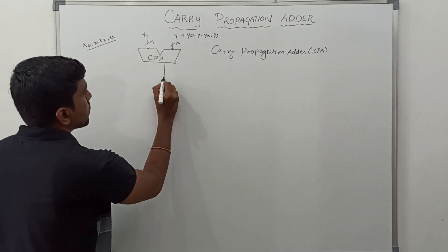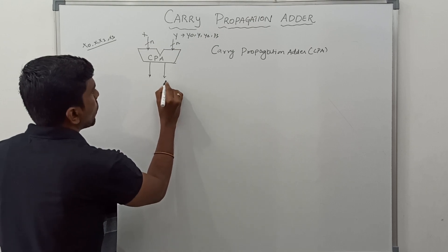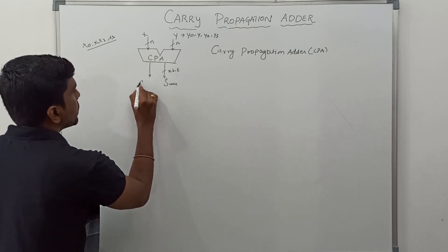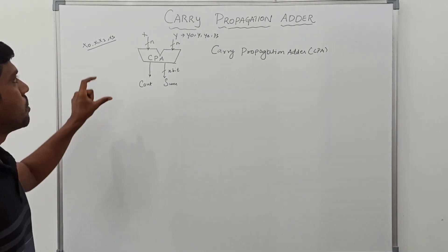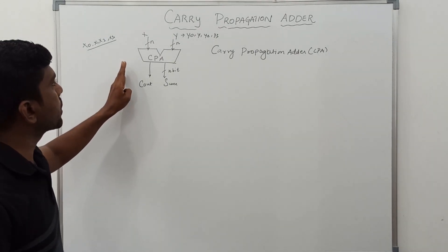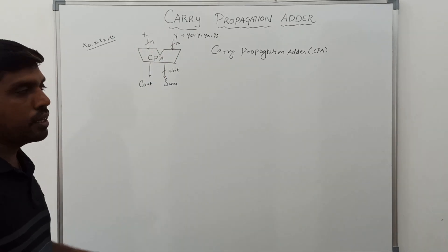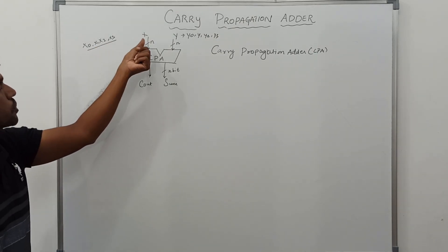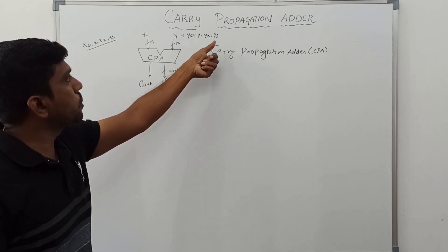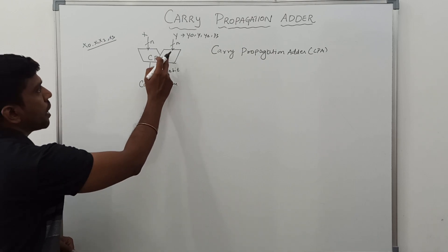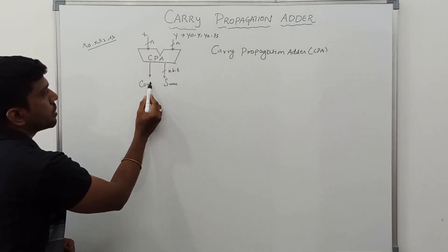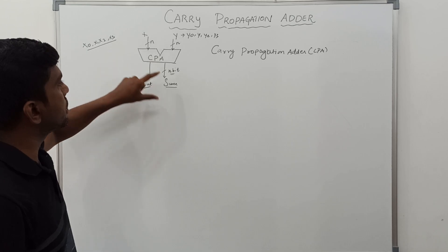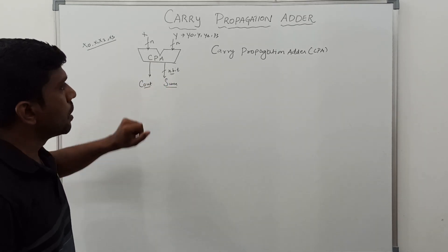This carry propagation adder produces two outputs: one output is called sum — this output is also an n-bit value — and the next output is cout (carry out). So in this structure we have two inputs, x and y. Suppose the binary bit value is four numbers: x0, x1, x2, x3 for input x, and y0, y1, y2, y3 for input y. After adding these two numbers x plus y you get two results: one is sum and another one is carry out. Sum is an n-bit value, and carry out is a one-bit value.